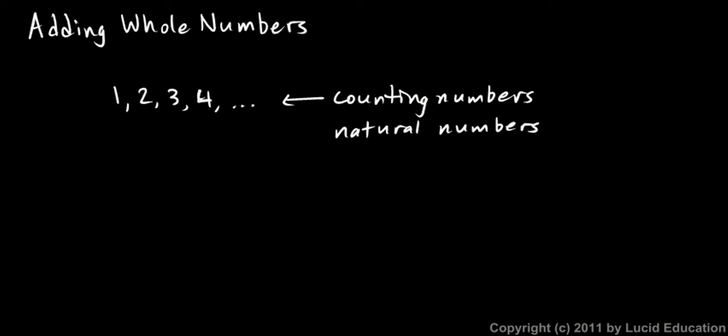And they're called that because those numbers are the way that we naturally count. We start at one and we go up. But the number zero is also very important. And if you want to do more than just count, if you want to do some arithmetic, if you want to start adding, subtracting, multiplying, and dividing, the zero becomes very important.